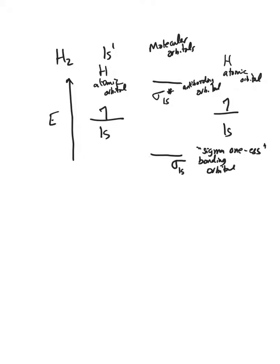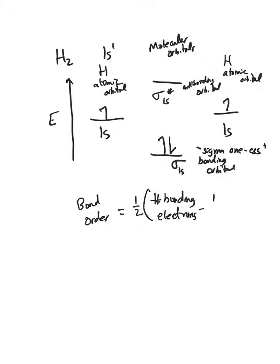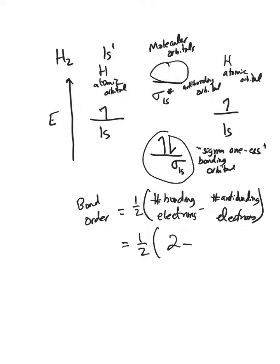We put our electrons into these molecular orbitals — two electrons go into the sigma 1s bonding orbital. We can then calculate the bond order, which equals one-half of the number of bonding electrons minus the number of antibonding electrons. I've got two bonding electrons in sigma 1s and no electrons in the antibonding sigma 1s star. So 2 minus 0 is 2; half of 2 is 1 — a bond order of 1. And if we draw a Lewis structure, that gives us diatomic molecular hydrogen with its single bond.